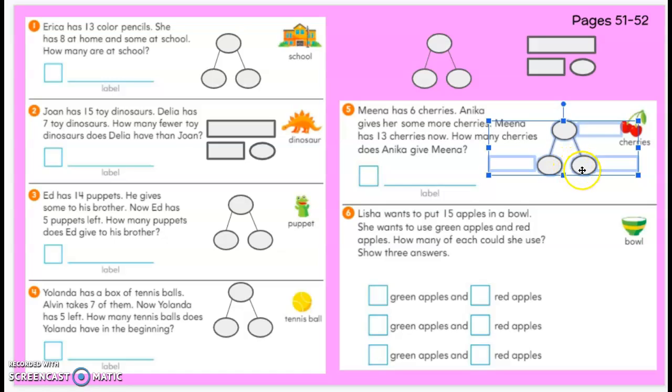Annika gives her some more. We don't know how many. It doesn't say a number there, right? So maybe gets or Annika gives could be the label. You could put a question mark there or leave it blank for now. Mina has 13 cherries now. Thirteen is the total now.